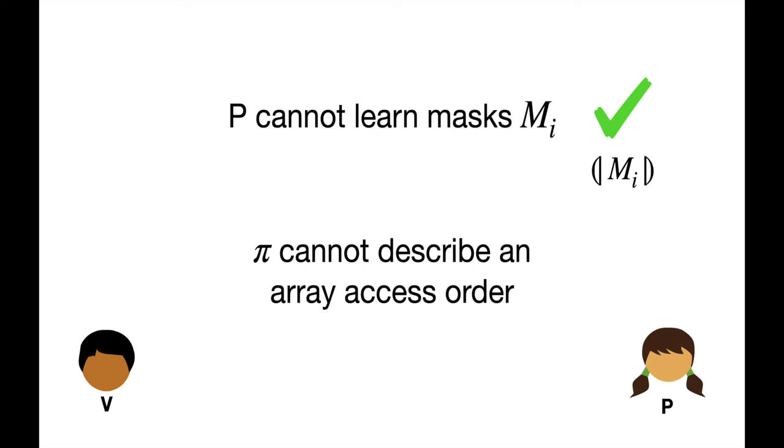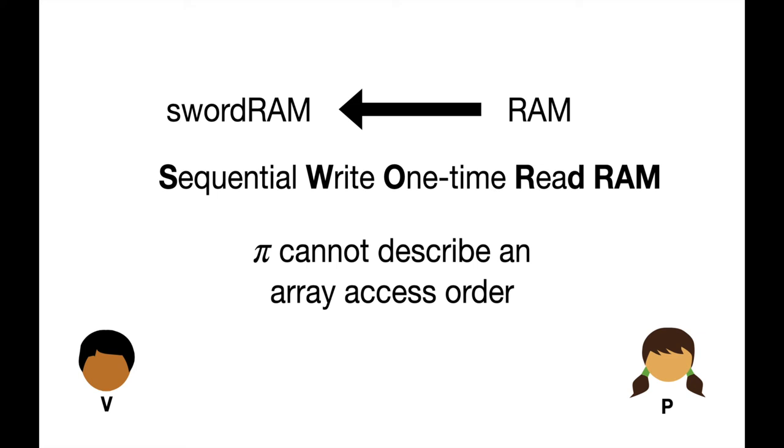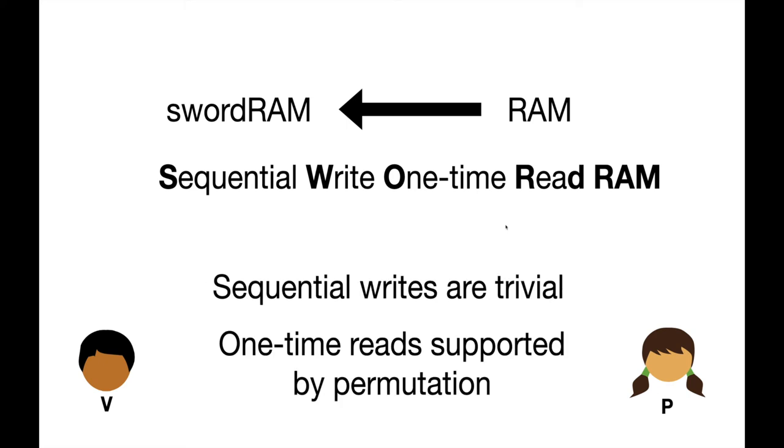However, one high-level problem from our intuition remains. As described, our RAM still only supports access orders that can be expressed as permutations. To support full RAM, we need to upgrade the RAM to support arbitrary access orders that cannot be described as permutations. To implement general-purpose RAM, we will perform a reduction to a simpler object that we call a sword RAM. A sword RAM allows random access reads but only allows each RAM slot to be read at most one time. Meanwhile, the sword RAM only allows sequential writes. That is, the parties can only append values to the end of a sword RAM. Since we write sequentially, on each write the parties can trivially agree on masks for stored authenticated sharings. And since we read each element at most once, a permutation suffices to describe the read order. Thus, we have all the tools we need already to implement a sword RAM.